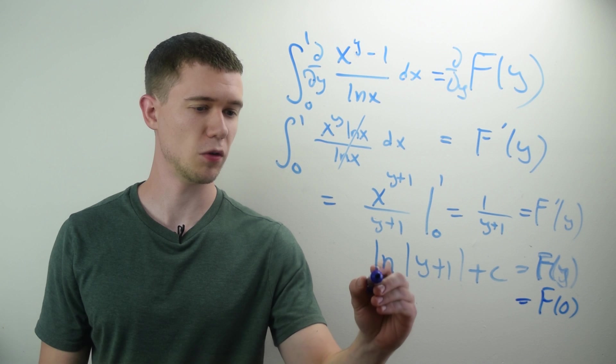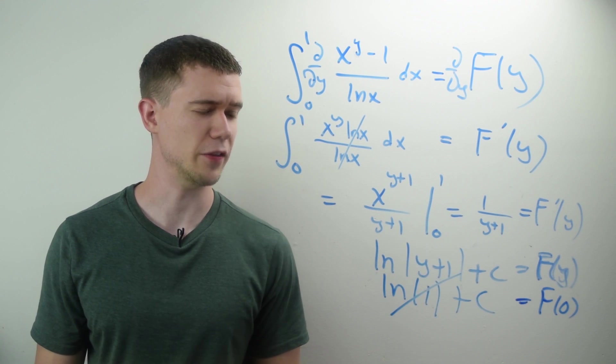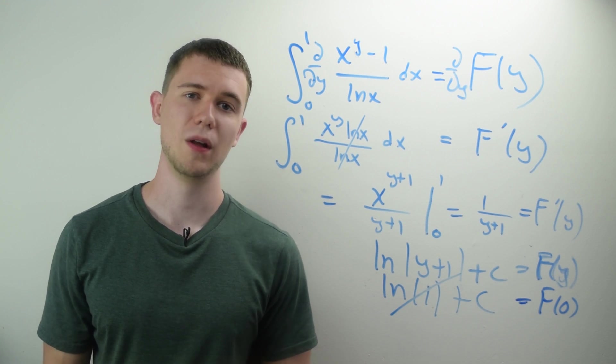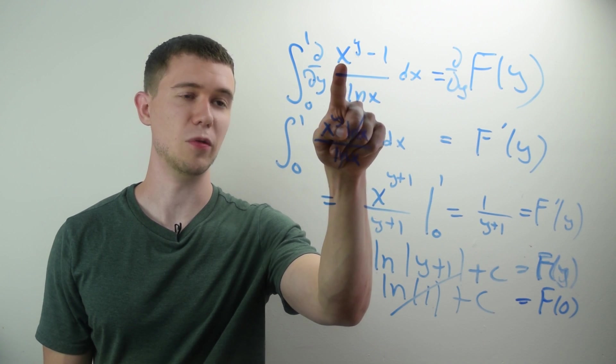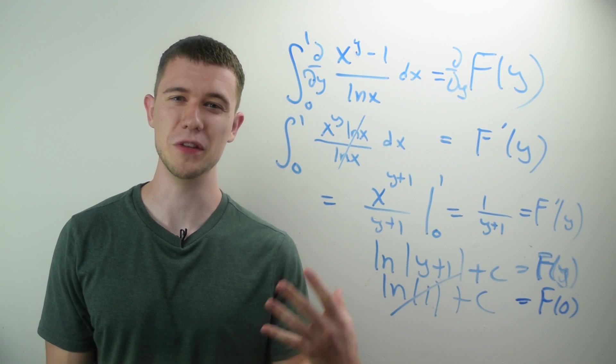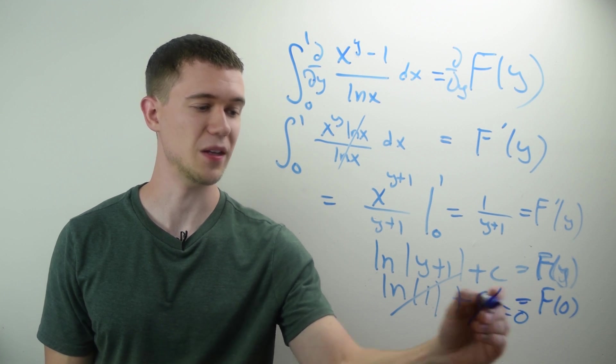Because if I plug in 0 for y, we'll just get log of 1, which is 0. And so we'll have f of 0 being c. Well, let's think. That just means that we would have had x to the 0, which is 1. So we're going to leave c also being 0.